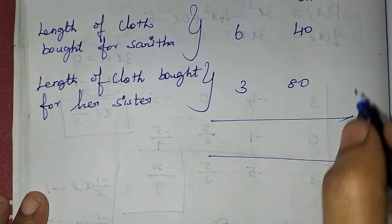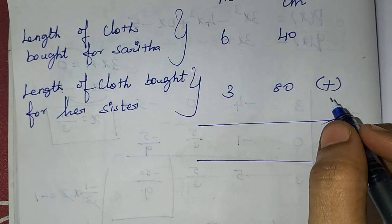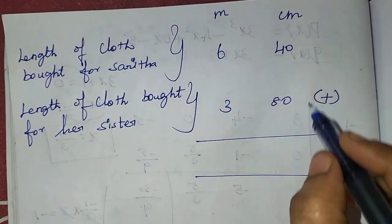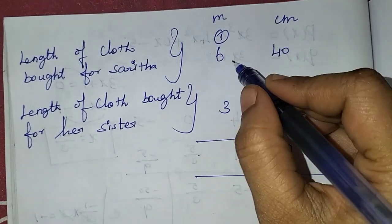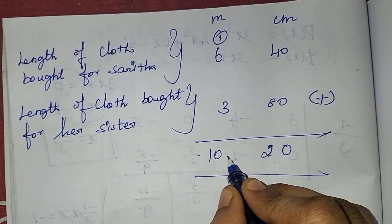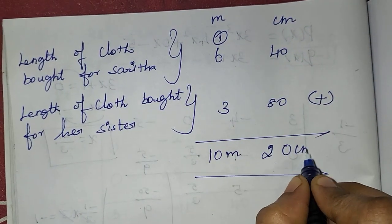Now how do we add? 0 plus 0 is 0, 4 plus 8 is 12, carry 1 here, then 6 plus 3 plus 1 is 10. The answer is 10 meters 20 centimeters.